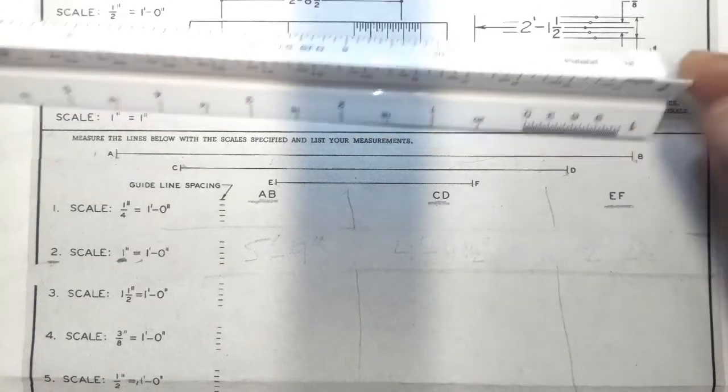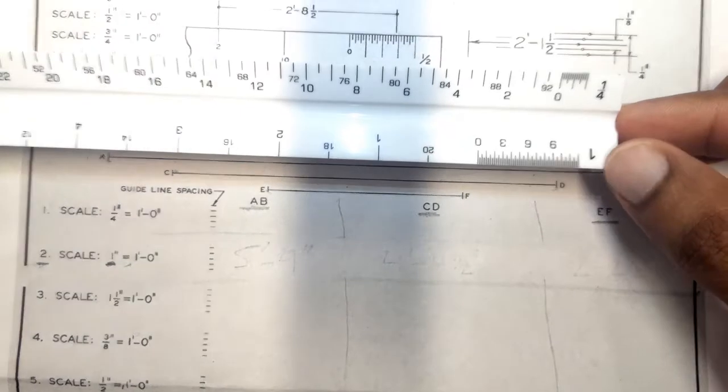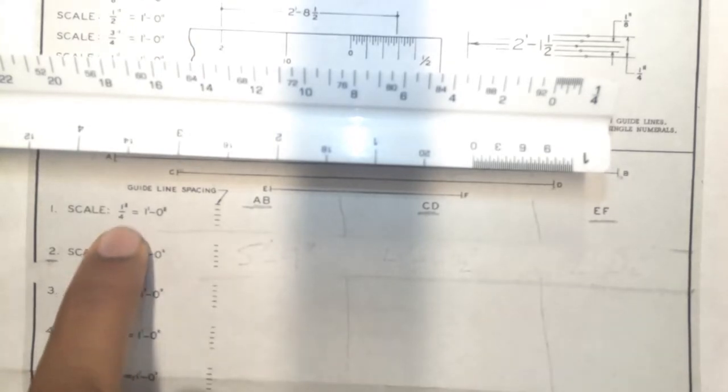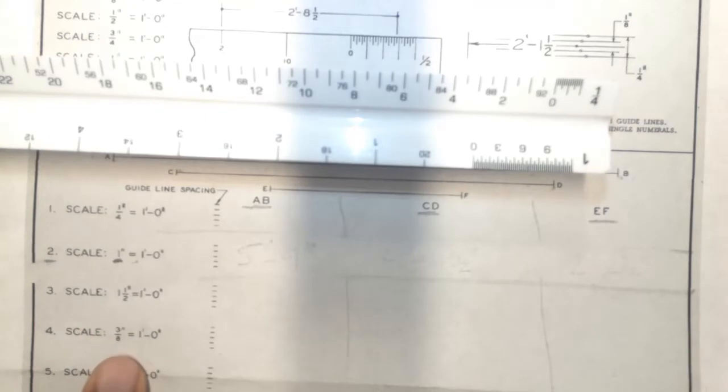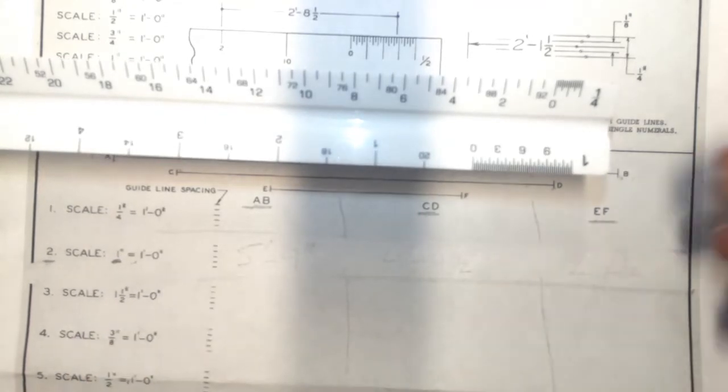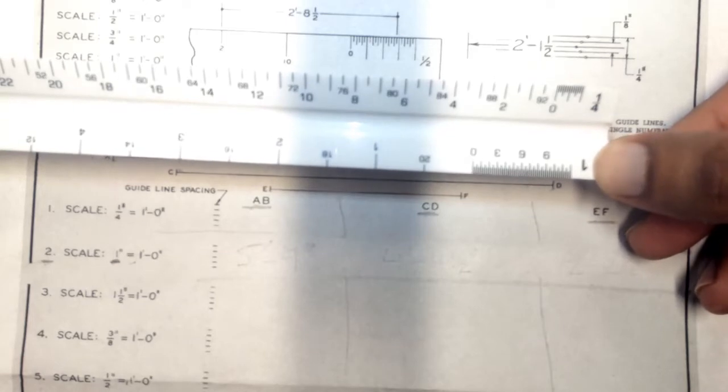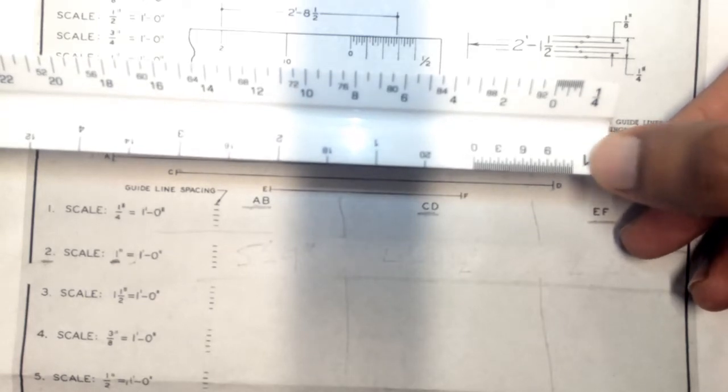The first thing I'm going to do is identify where my 1 inch is. We're going to be doing problem number 2. So 1 inch equals 1 feet. That inch number, or that quarter inch there, one and a half inch there, three eighths inch there, is the number that you're going to be identifying on the edge of your scale. That translates to 1 inch equals 1 feet.